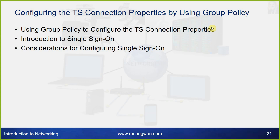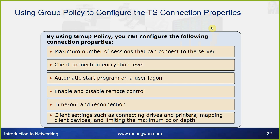Using group policy to configure TS connection properties, you can configure: the maximum number of sessions that can connect to the server, client connection encryption level, automatic start program on user logon, enable and disable remote control, timeout and reconnection, client settings such as connecting drivers and printers, mapping client devices, and limiting the maximum color depth.